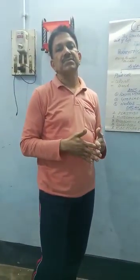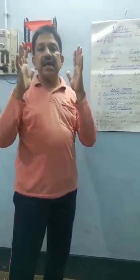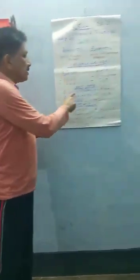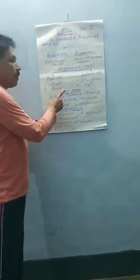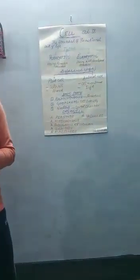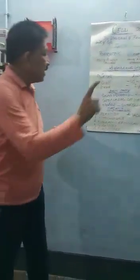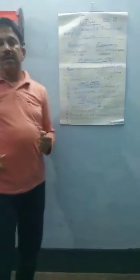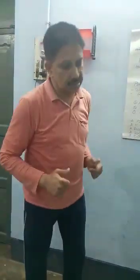Now we will discuss about the basic structure of the cell. The cell has three basic structures: first, the plasma membrane; second, the cytoplasm; and third, the nucleus.